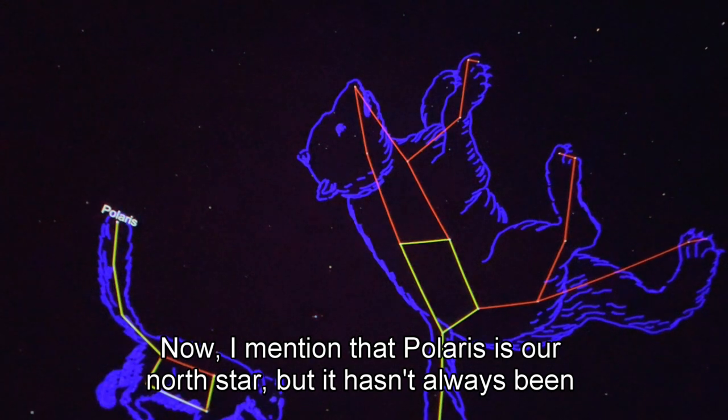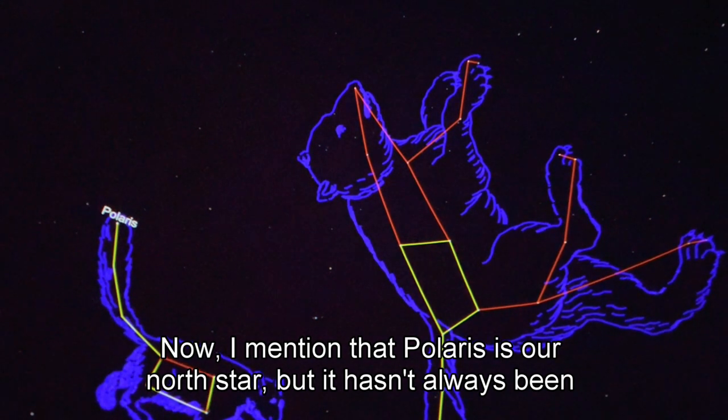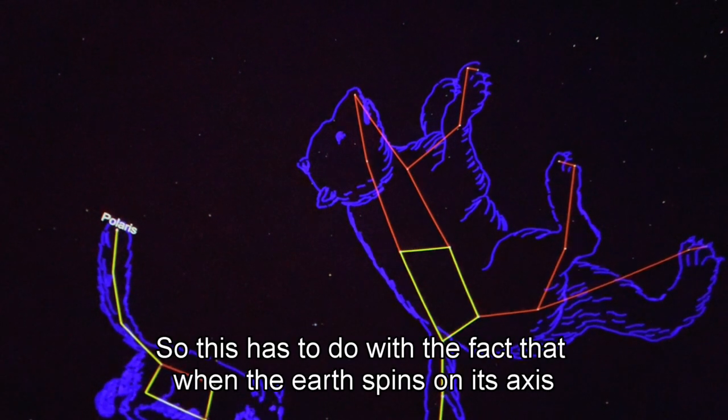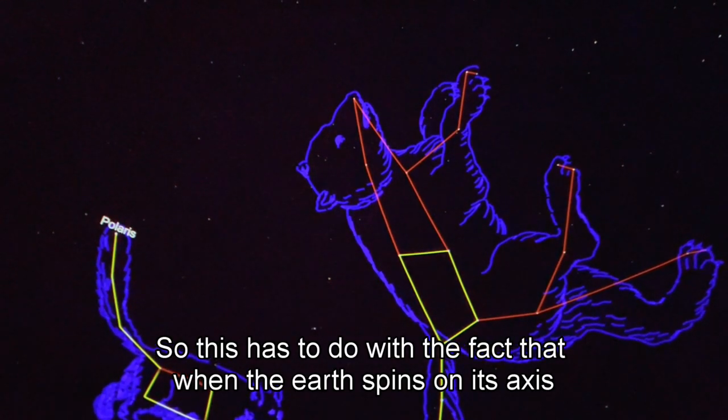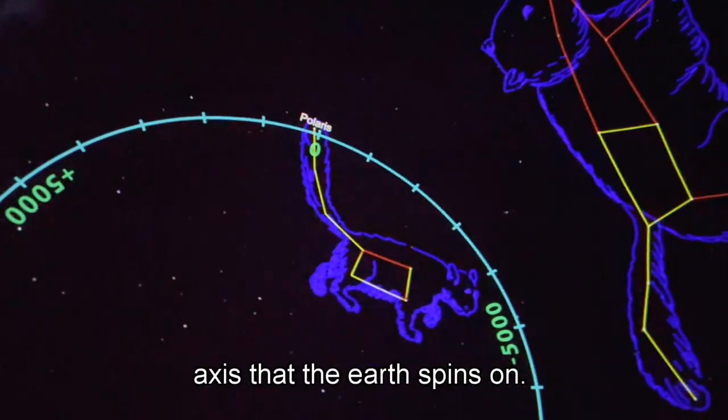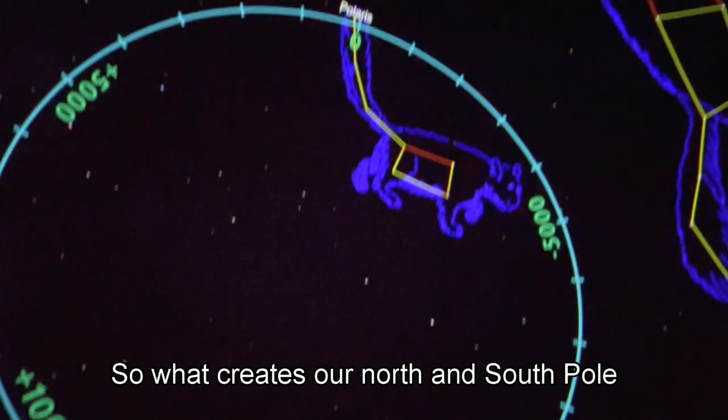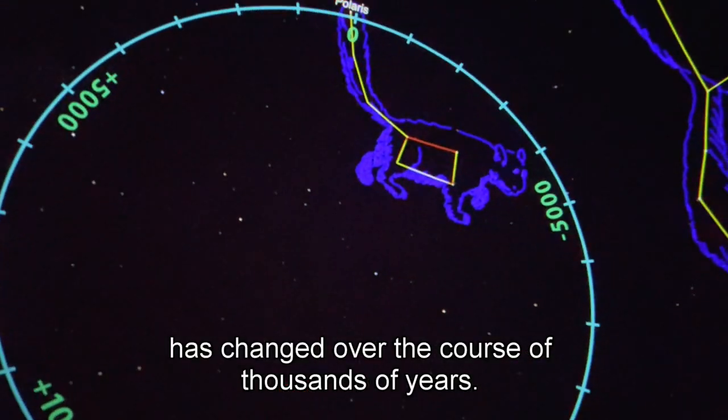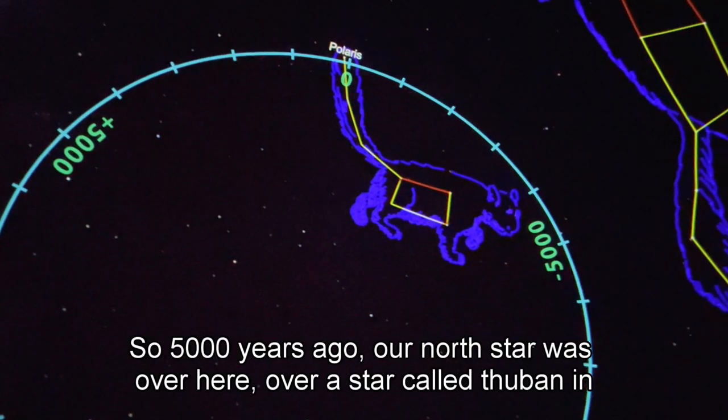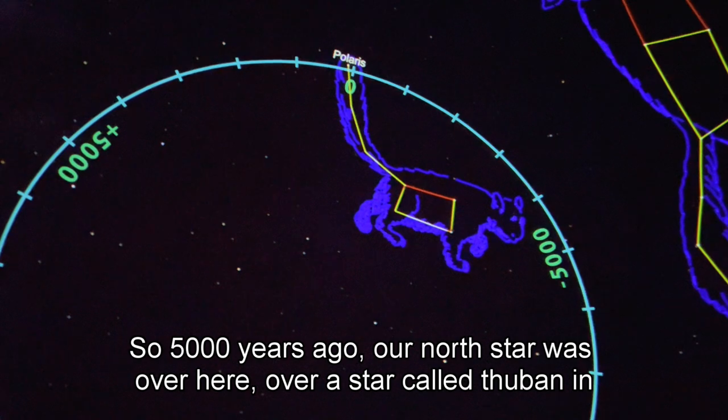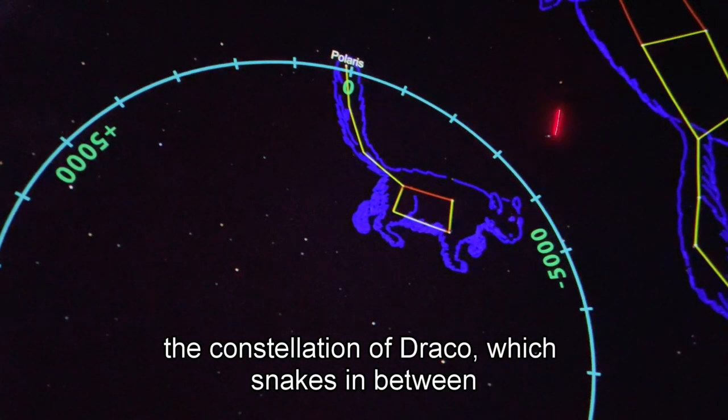I mentioned that Polaris is our north star, but it hasn't always been our north star nor will it always be our north star. This has to do with the fact that when the earth spins on its axis, the axis that the earth spins on, which creates our north and south pole, has changed over the course of thousands of years. So 5,000 years ago our north star was over here, over a star called Thubin in the constellation of Draco, which snakes in between the big and little dipper.